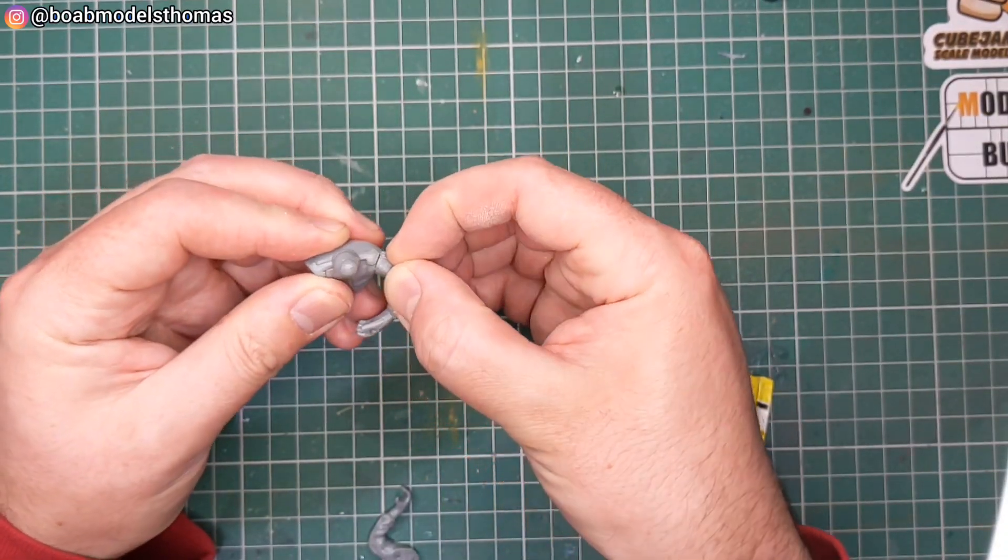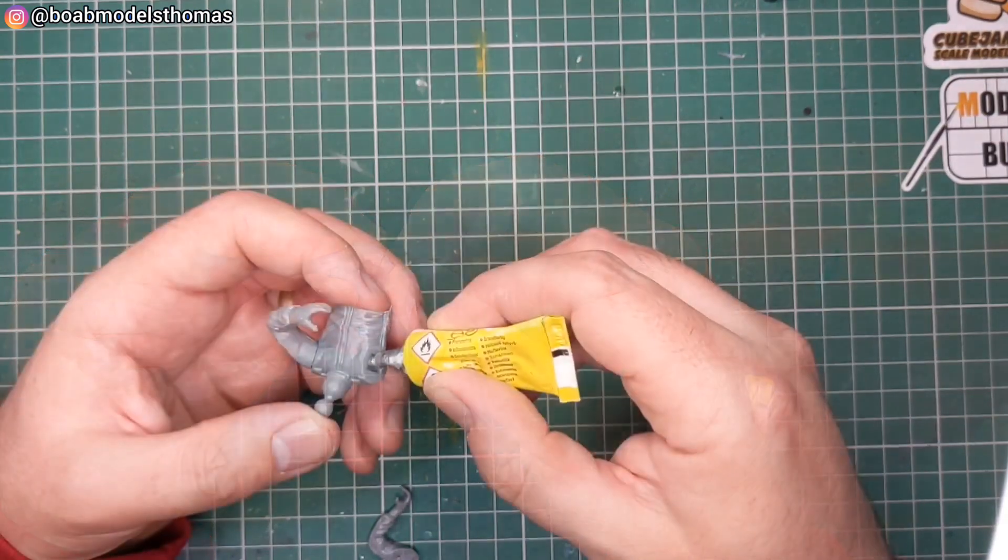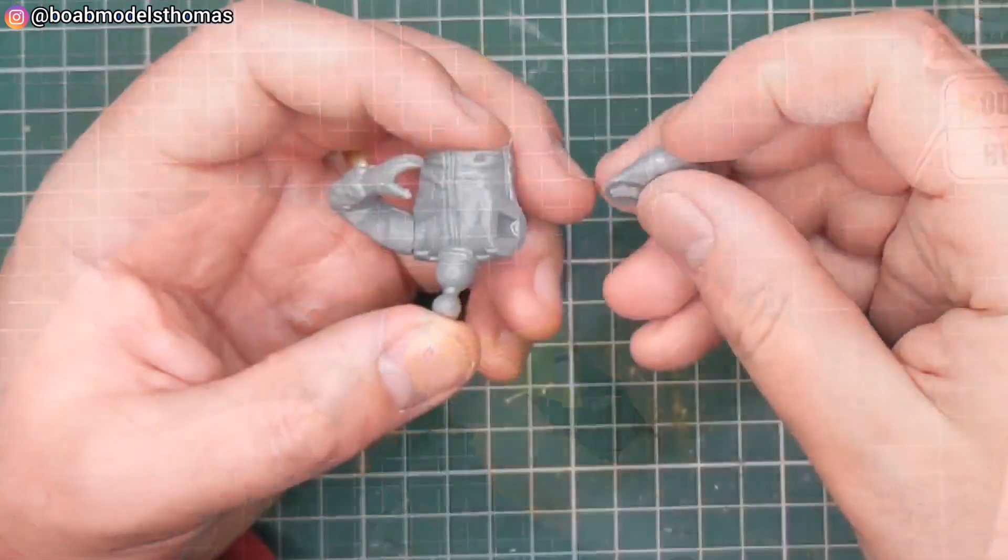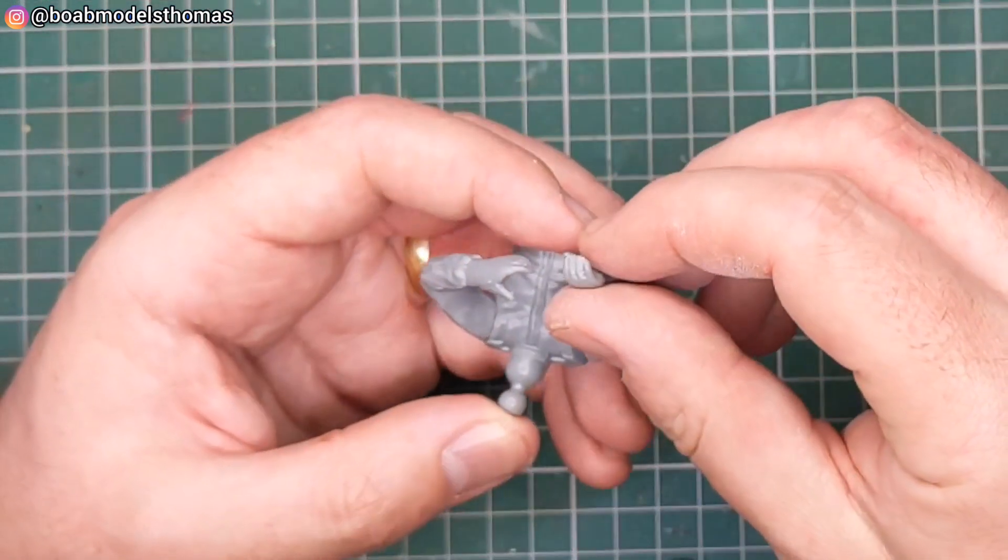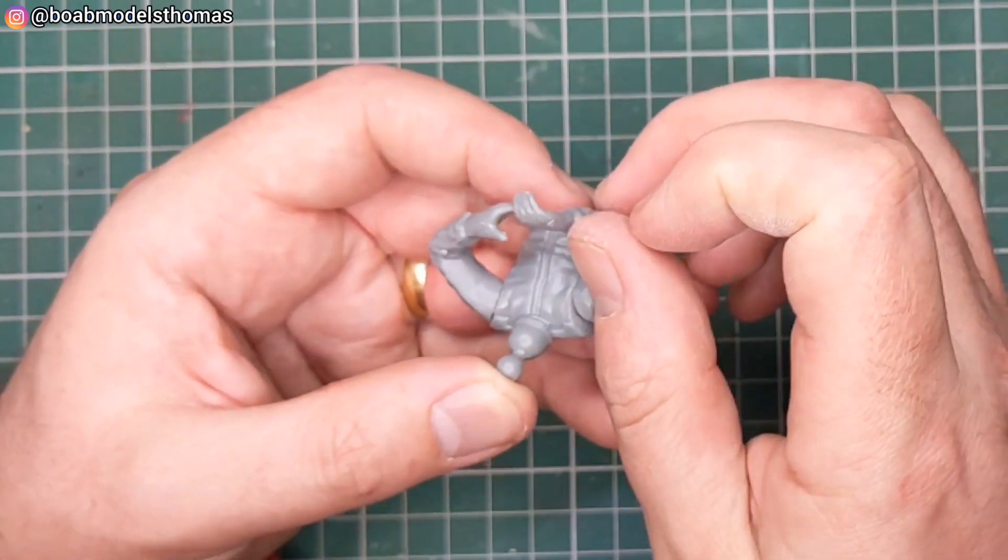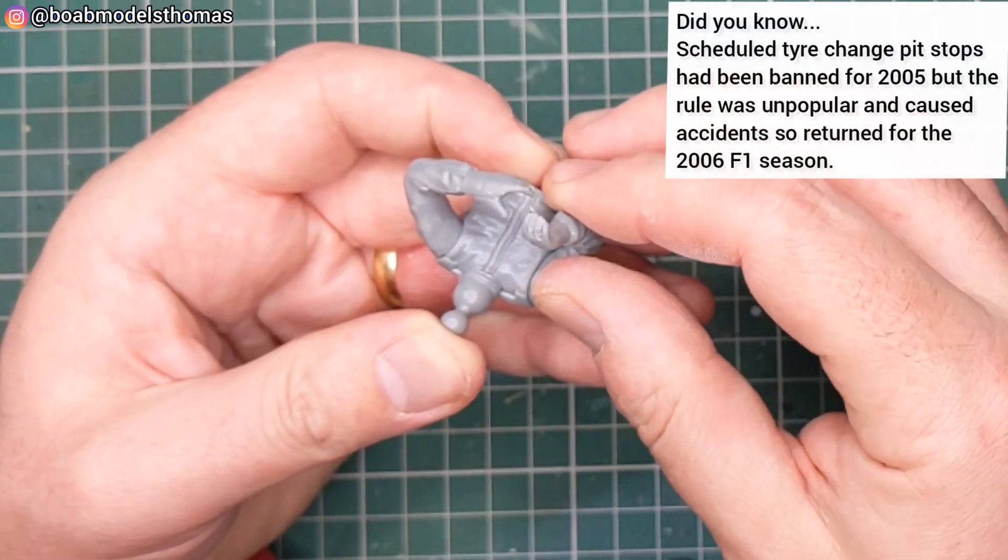I found that the Tamiya extra thin cement was good to go around the edge of the seams in case they were still a little loose. This is figure A which has hands in these positions to hold onto the wheel gun.